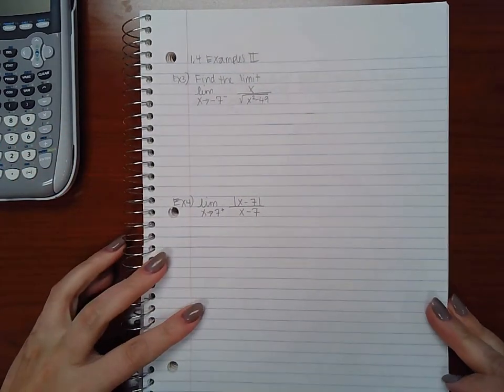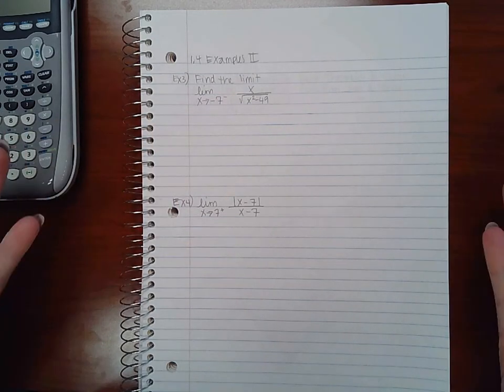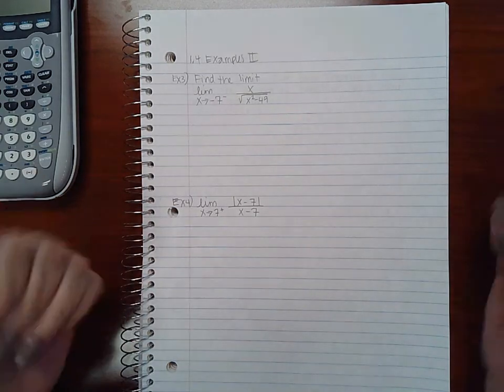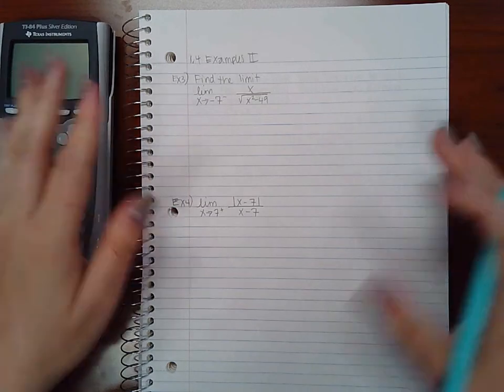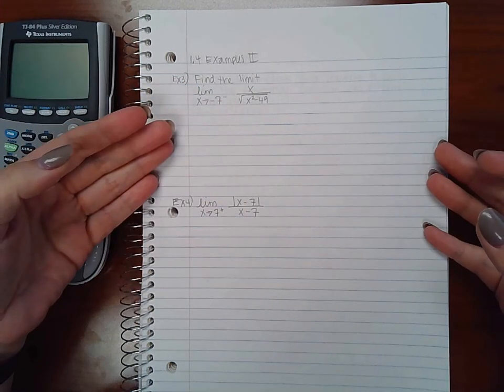I need to be able to see how you're getting the values that you're getting. Now if you wanted to, you could use the graphing calculator and graph it and then see what is going on there, but if you choose to do that you do need to draw it on paper.